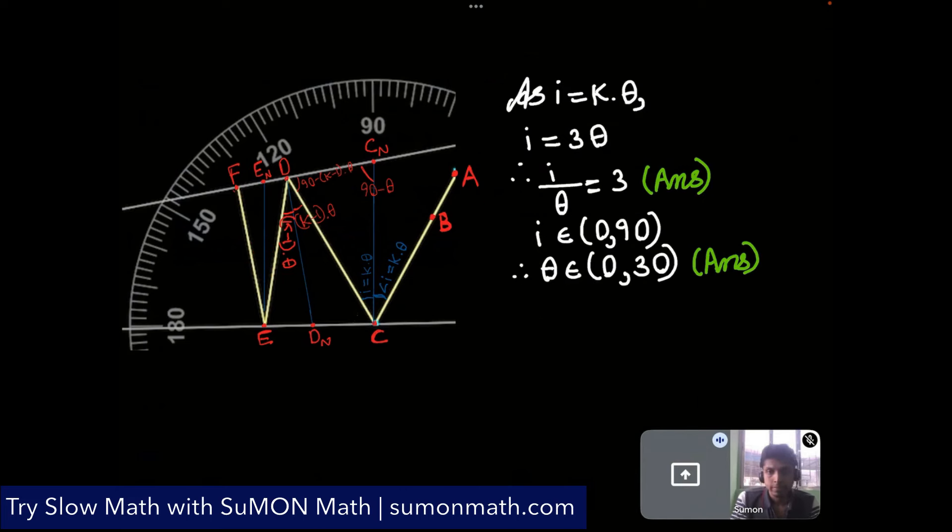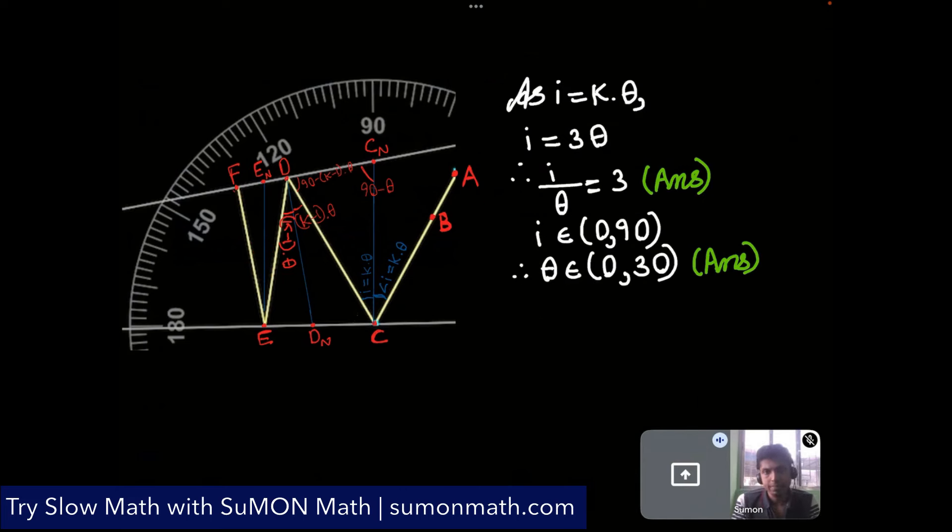So 3 is the ratio between i and theta. And i can vary anywhere in between 0 and 90 and theta will vary from 0 to 30 because the ratio is 3.